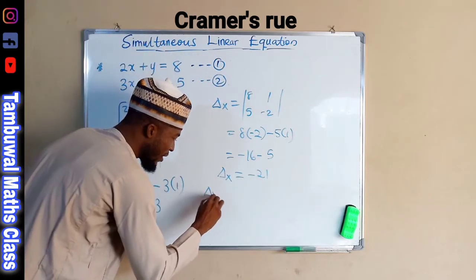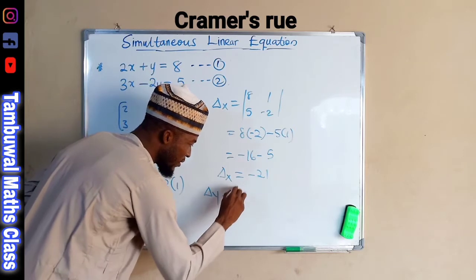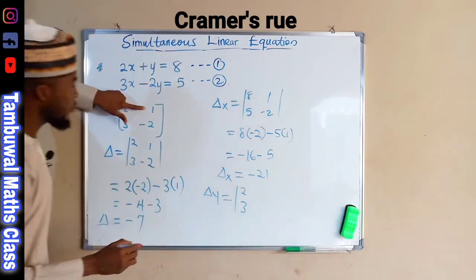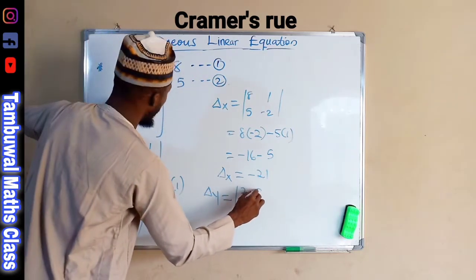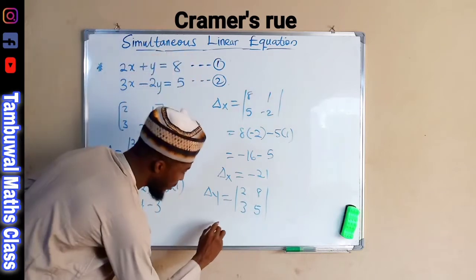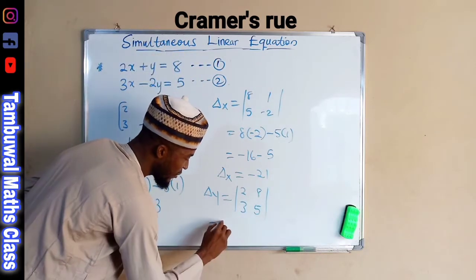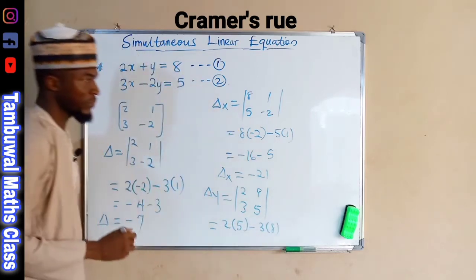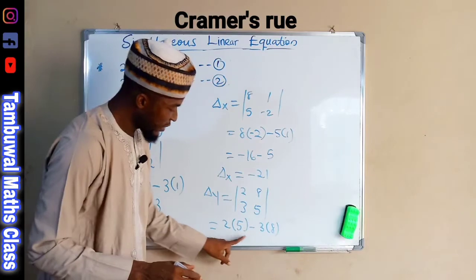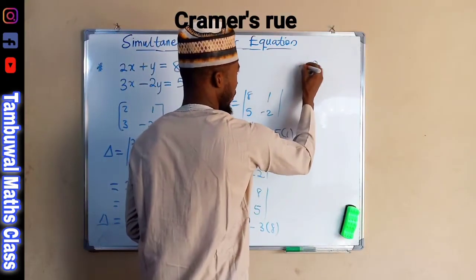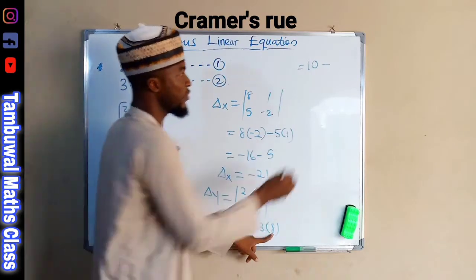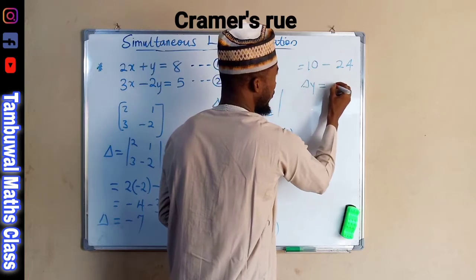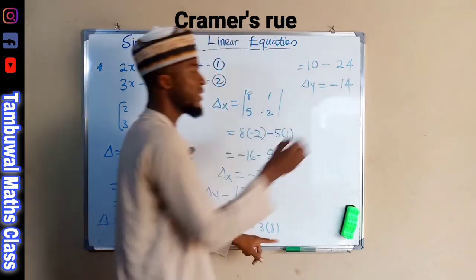Next, we find the determinant with respect to Y. We keep the X column as 2 and 3, and replace the Y column with our constants 8 and 5. The determinant is 2 times 5 minus 3 times 8, which gives us 10 minus 24.